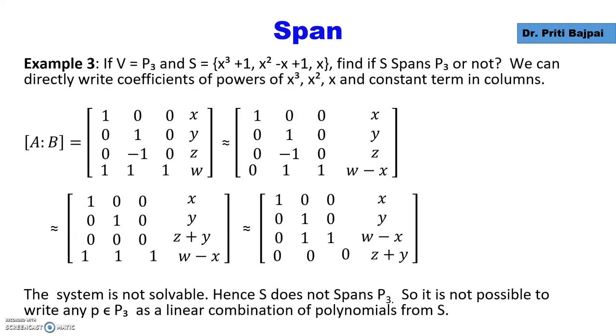Let's take another example. This time let's take the vector space to be P₃, the vector space of all polynomials of degree less than or equal to 3. We take the subset S of these three polynomials: x³+1, x²-x+1, and x.